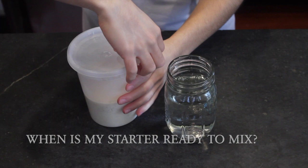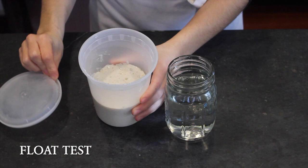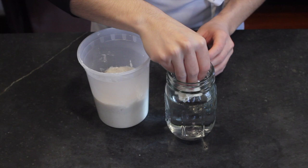We do this by taking a glass of cold water. We're going to dip our hands in the water, reach into our starter and gently pull a pinch off the top and drop it off into our water. If it floats, our baby's ready. It means it's producing a healthy amount of carbon dioxide and it's ready to go.